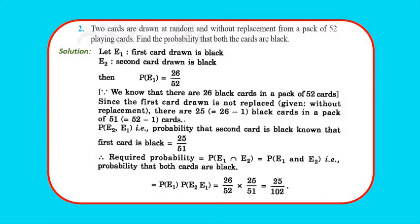Question 2: Two cards are drawn at random and without replacement from a pack of 52 playing cards. Without replacement means if we have taken one card, we are not going to put it back in the deck, so remaining cards reduce from 52 to 51.